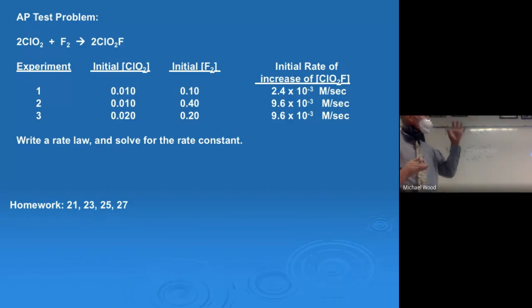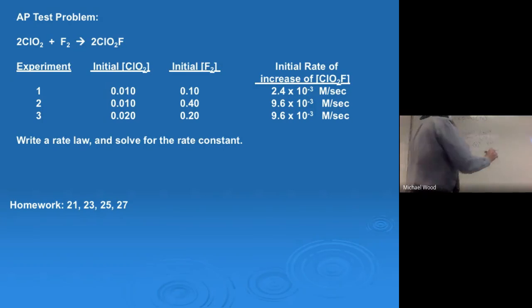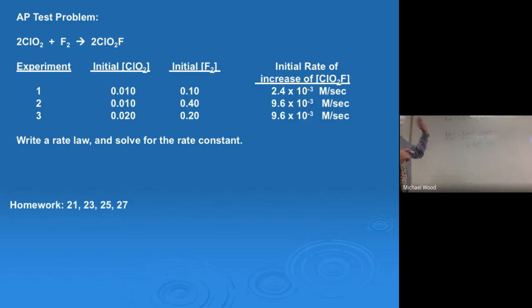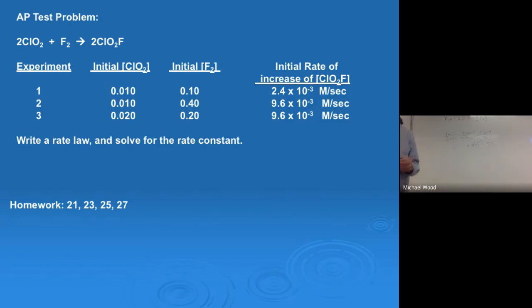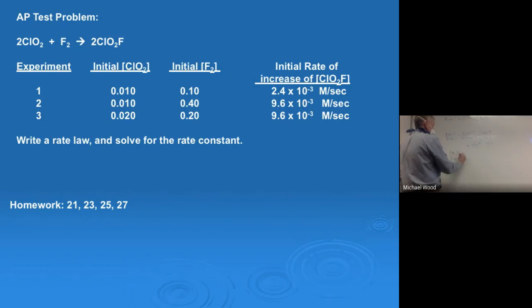Again, this is an AP-like problem — that's why it says AP test problem. It's a little bit trickier. So I've got y = 1. Now to figure out x — the reason I wanted to figure out y first is that when I figure out x, F2 is not constant, so I'm going to have to include F2 in my ratios. Looking at experiments one, two, and three, I need experiment three. I'm going to do experiment three over experiment two.